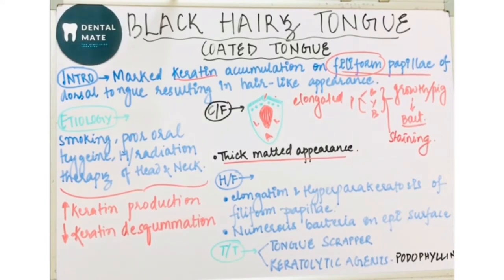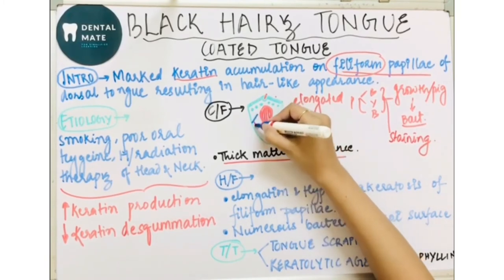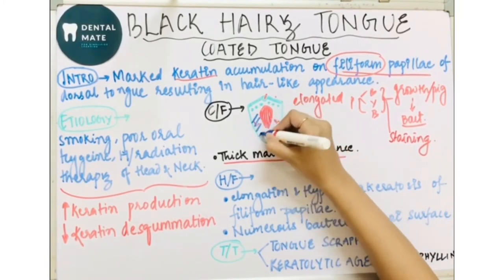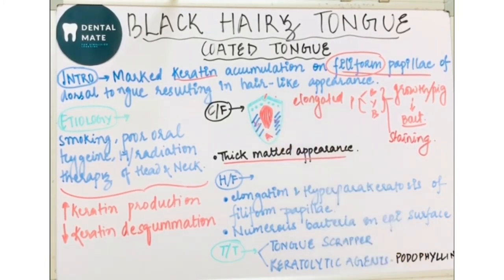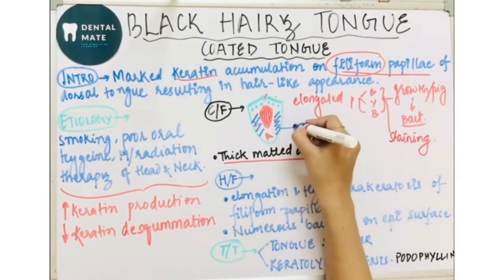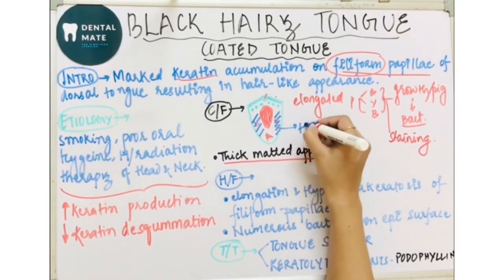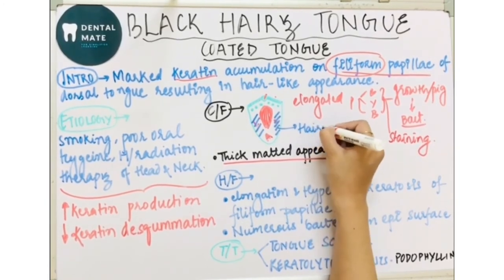There is also a condition called hairy leukoplakia, which we will learn about later. Remember that hairy leukoplakia involves the lateral borders of the tongue. Black hairy tongue does not commonly involve the lateral borders — it spares them.